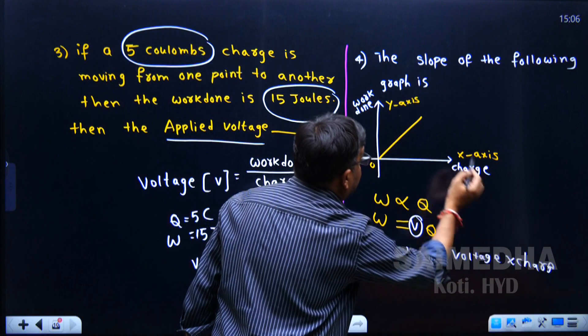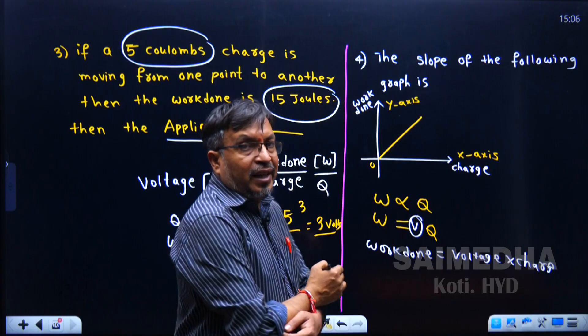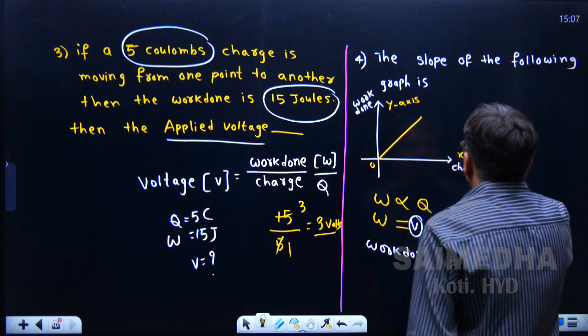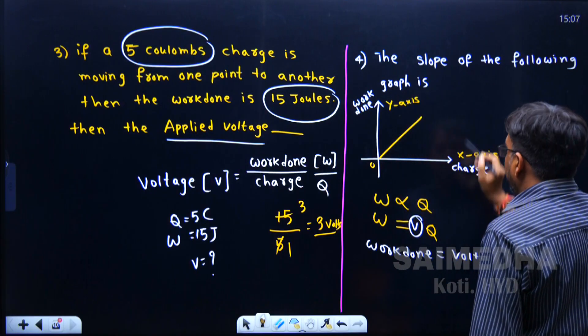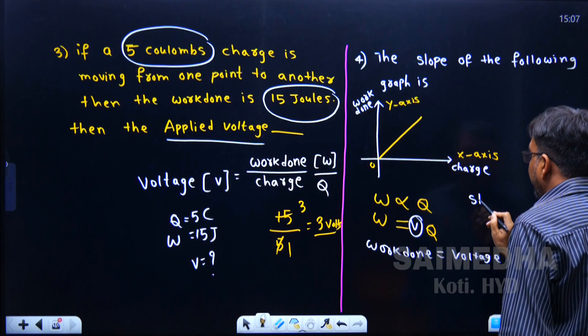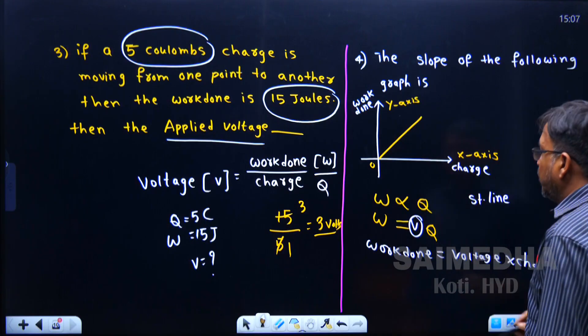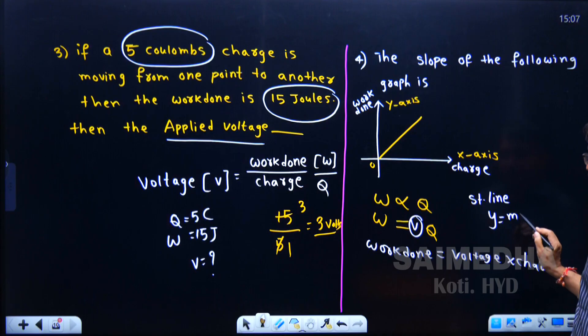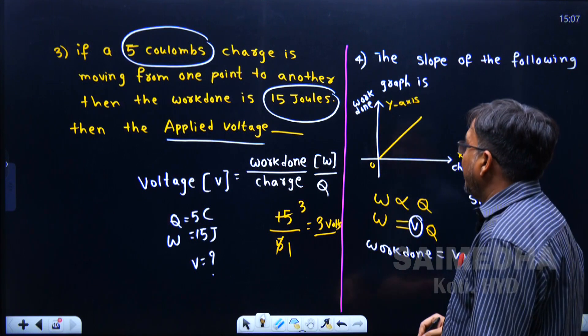This is a straight line equation. The equation given in the exam is a straight line which is passing through the origin, passing through this origin.